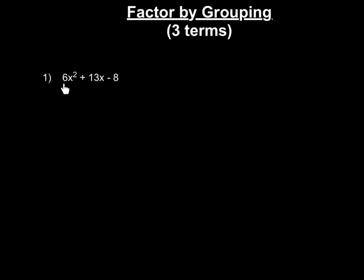So now this is how it works. You still want to say to yourself, the first step in factoring always: can I factor out the greatest common factor? Which if you look at these three terms, there's nothing to factor out. So instead of coming up with two numbers that add to our middle term and multiply to this last term, what we're going to do is we're going to multiply together the first and the last terms, like it's this negative 48.